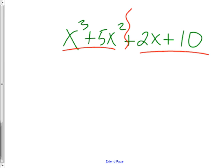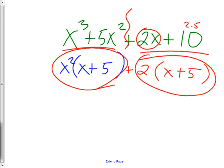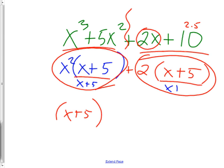Did you notice that x squared goes into both terms in the first half, leaving x plus 5? And that a 2 goes into both terms of the second half, also leaving x plus 5? That's not a coincidence — it was set up to be factored again. Both pieces have x plus 5 in common, so factor it out. The x plus 5 comes out front, and what remains is x squared plus 2.